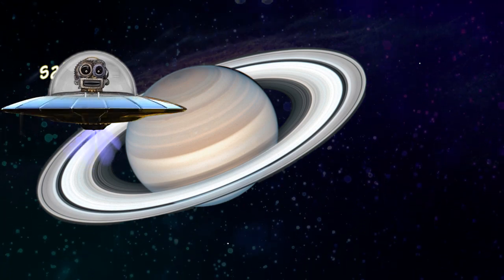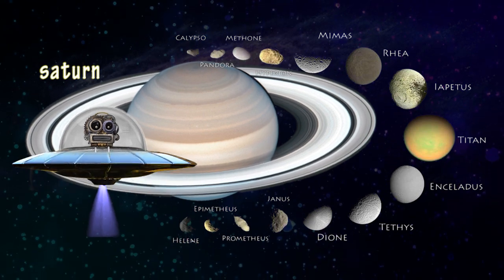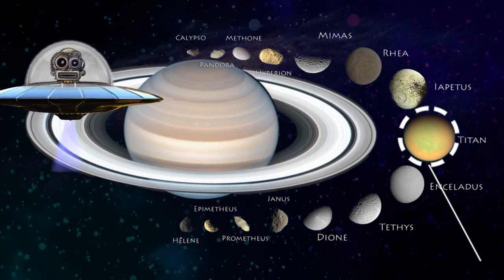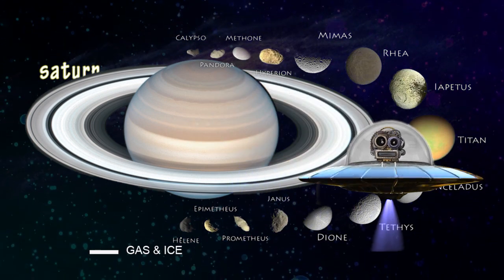Saturn. There are about 150 frozen moons around Saturn. The largest one is called Titan. This planet has beautiful rings around it, made of dust and ice.